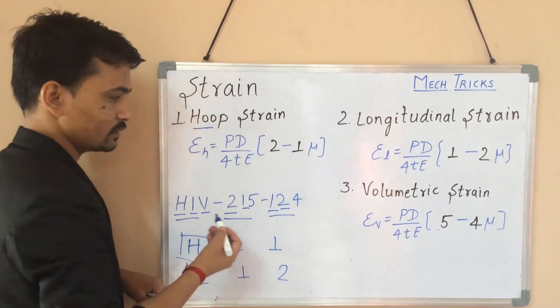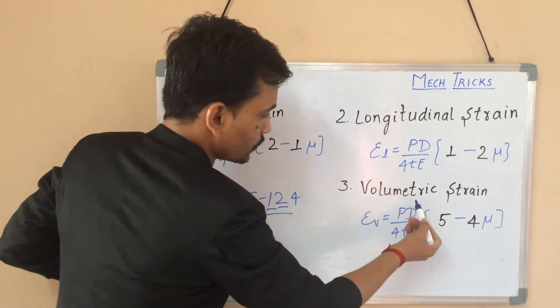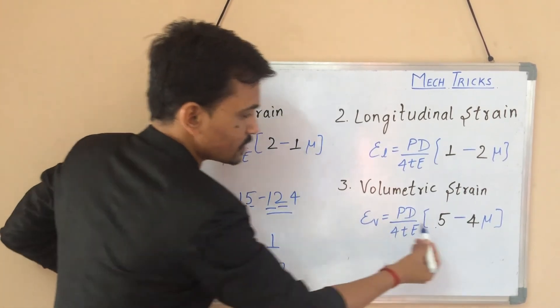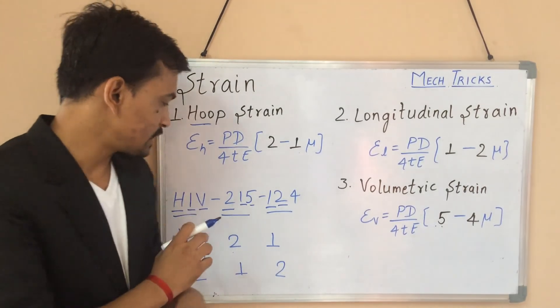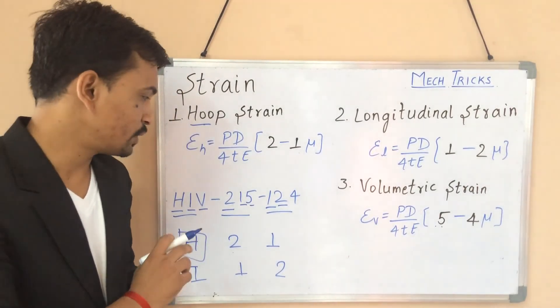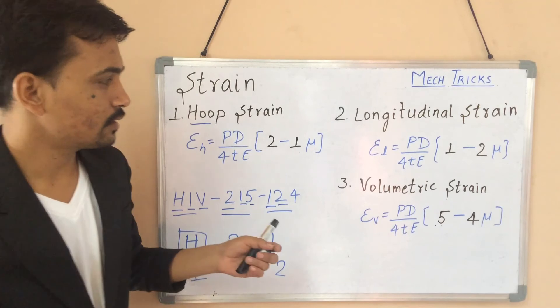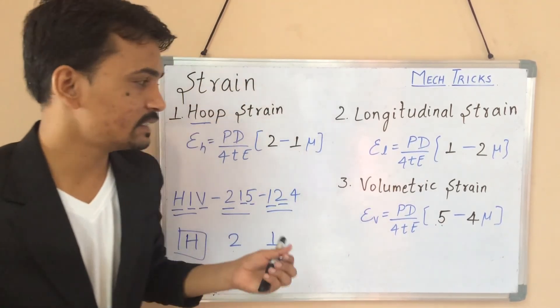And this V, we can connect it. This V for volumetric strain, 5 is taken from here and 4 is here. Just by remembering this, that HIV 215-124, we can make a difference in these formulas and remember it easily.